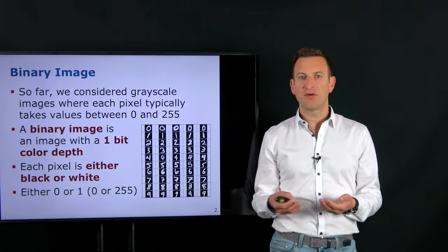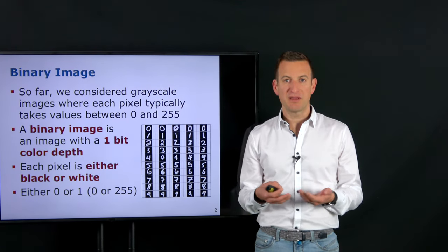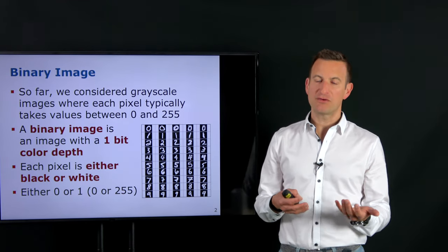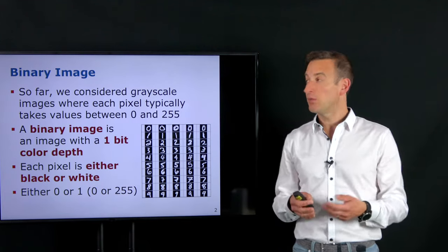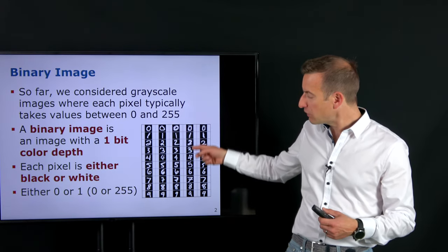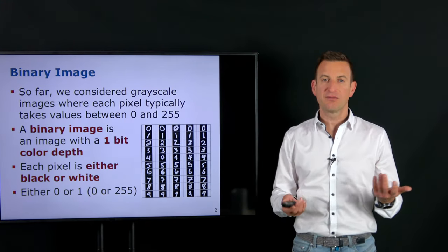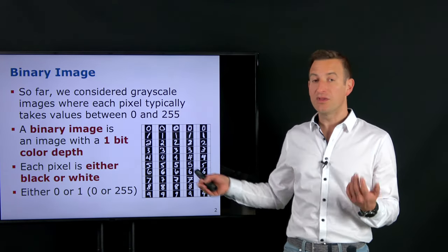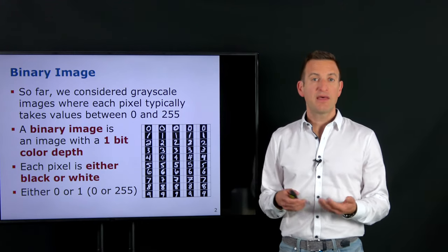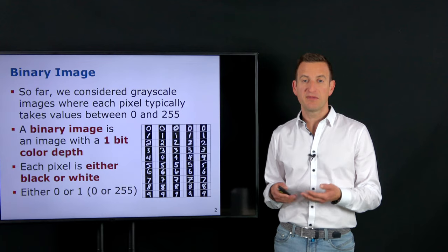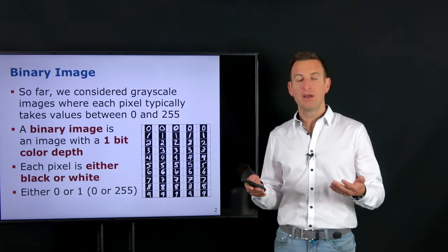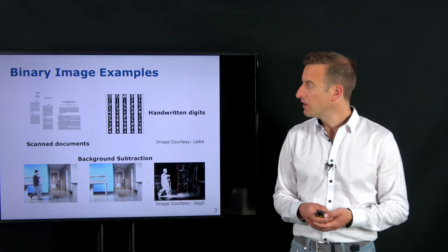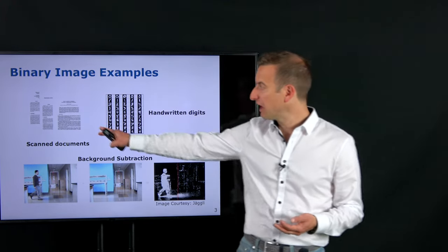Of course, if you think about a photo, that's a very limited color space, and most images you take with your camera won't look nice in binary format. But there are other applications where binary images work fine. For example, recognizing handwritten characters or digits from 0 to 9 — in order to perform the detection task, we can do this purely based on binary images.